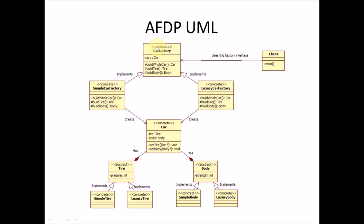Here you can see the UML diagram — the same structure I've implemented in C++ code. This is the abstract car factory, which is inherited by the simple car factory and the luxury car factory. There's a public interface called build whole car that the client will call, and it returns a car object. That car object composes a tire and a body object, each of which has an interface with simple and luxury variants.